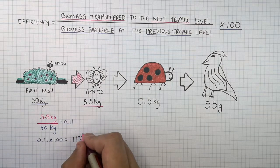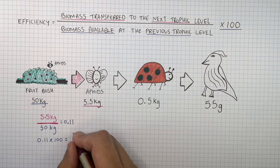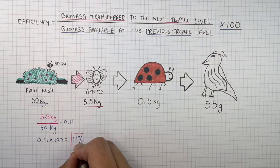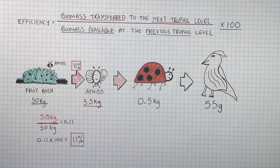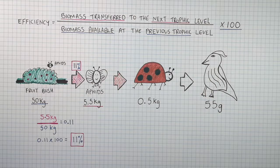That means 89% of the energy stored in the biomass of the fruit bush is transferred to other energy stores. Next, 5.5 kilograms of biomass in the aphids at the second trophic level is transferred to 0.5 kilograms of biomass stored in the ladybirds at the third trophic level.